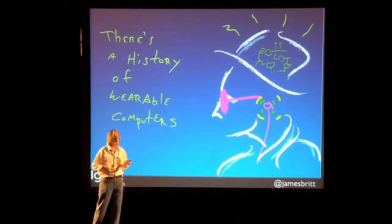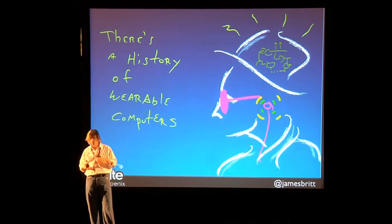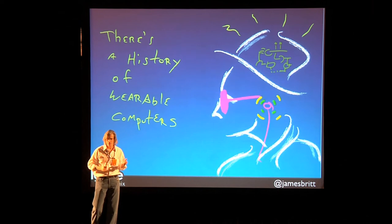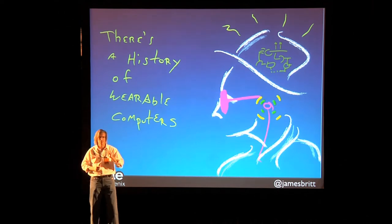In 1966, Ed Thorpe and Claude Shannon built a wearable computer about the size of a pack of cigarettes that let them calculate the odds for a roulette wheel. This is some serious science. This is chips for chips.